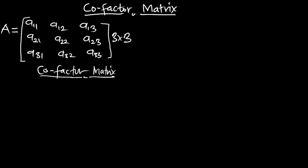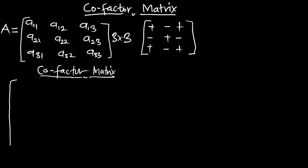Straight away, if you want to get the cofactor matrix from matrix A, this is what we are going to do. First, you compare this matrix to the sign pattern: positive, negative, positive, negative, positive, negative, positive, negative, positive. We are going to use this idea to find the cofactor matrix. We always start from the positive. So at the first row, first column, after we select A11, the whole row 1 is cancelled and column 1 is cancelled.